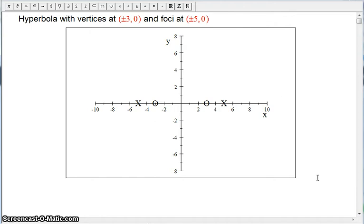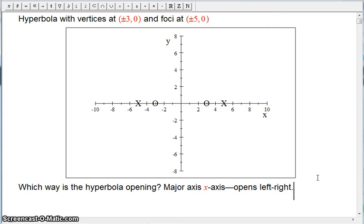So the first thing we need to know is which way is the hyperbola opening. Remember, it can open up, down, or left, right. Well, it always opens... the major axis is always the direction which way it's opening. And the major axis has the foci and the vertices on it. And that's the X axis here. And so it opens left, right.